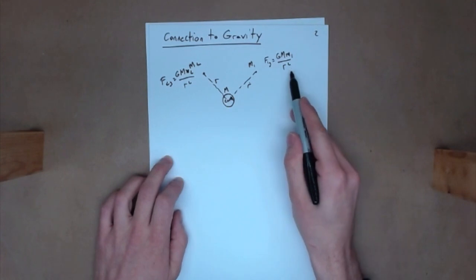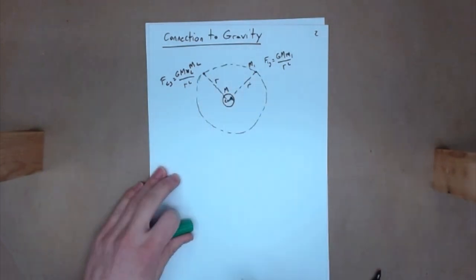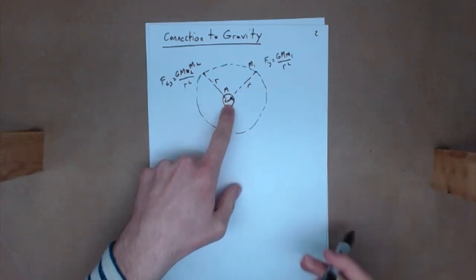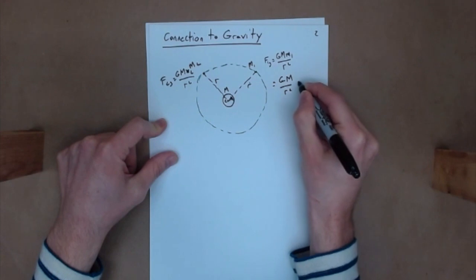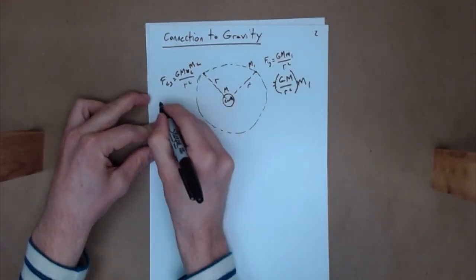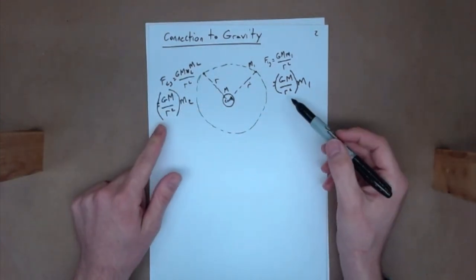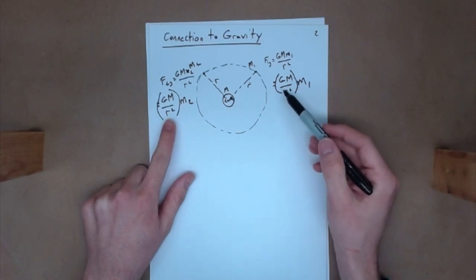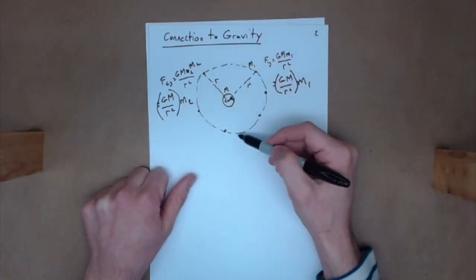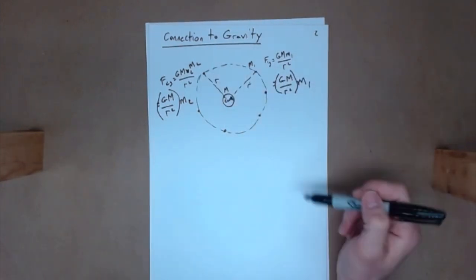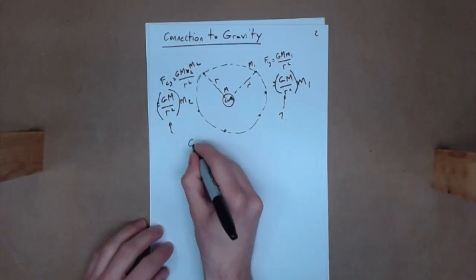Look at these two equations. Everything at a radial distance R from the Earth — the source of gravity — will have something in common. F1G = (GM/R²)·M1, and F2G = (GM/R²)·M2. That factor GM/R² is the same for any mass on that radial line. What is GM/R²? If we plug in the values at Earth's surface — G = 6.67×10⁻¹¹ N·m²/kg², mass of Earth = 5.97×10²⁴ kg, radius = 6.38×10⁶ m — we get 9.78 m/s².